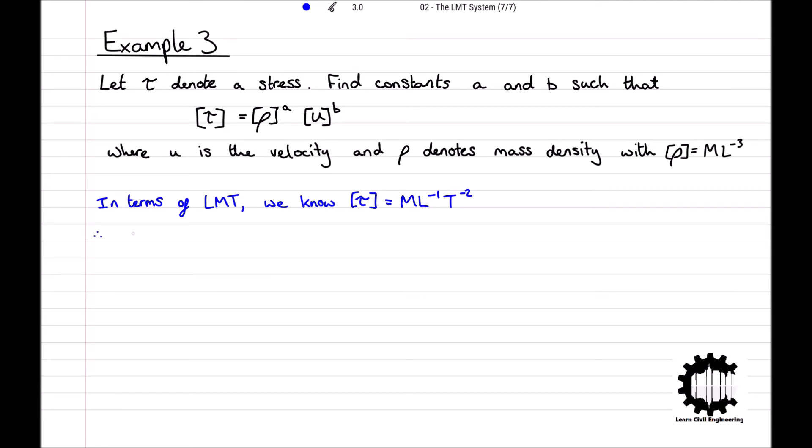So we can write out that the dimensions for tau equal ML to the minus 1 T to the minus 2, which equals the dimensions for rho to the power of A times by U to the power of B. Substituting in the dimensions that we already know for rho and velocity.